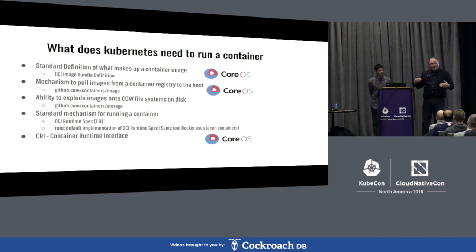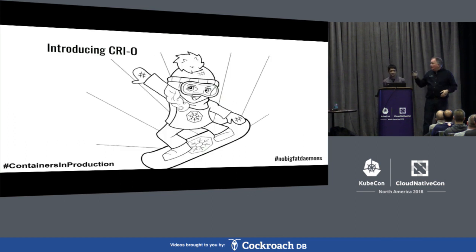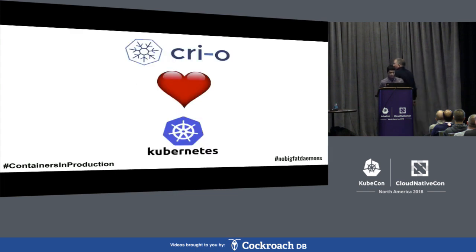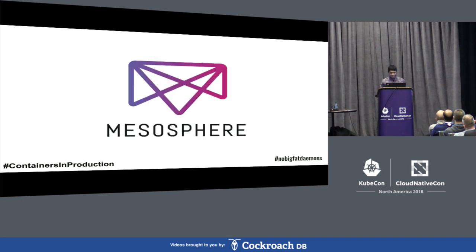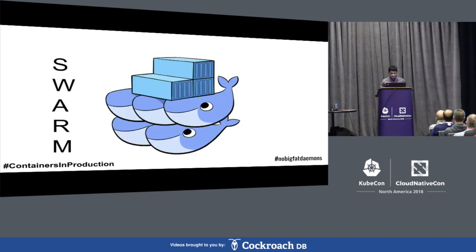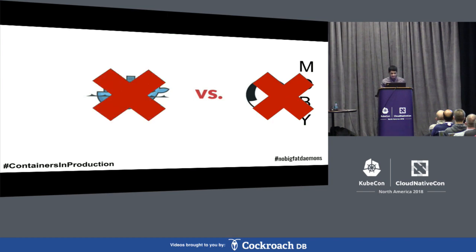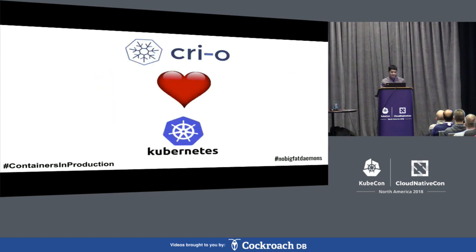One member of my team, Mrunal Patel, came to me and said we can build one of those. So: CRI-O. What is CRI-O? CRI-O basically loves Kubernetes. Its only purpose is to implement the Kubernetes CRI interface — nothing more and nothing less. It doesn't care about Mesosphere or anything else. It loves Kubernetes.